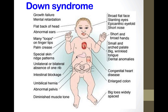Down syndrome is a very common chromosomal disorder. Many of you have met someone with Down syndrome. Features include growth failure, mental retardation, broad flat face, and slanting eyes.